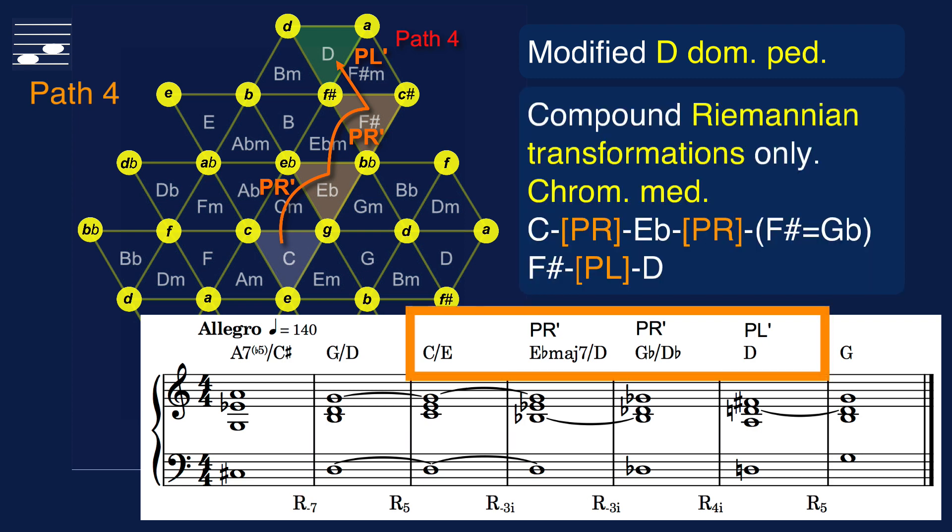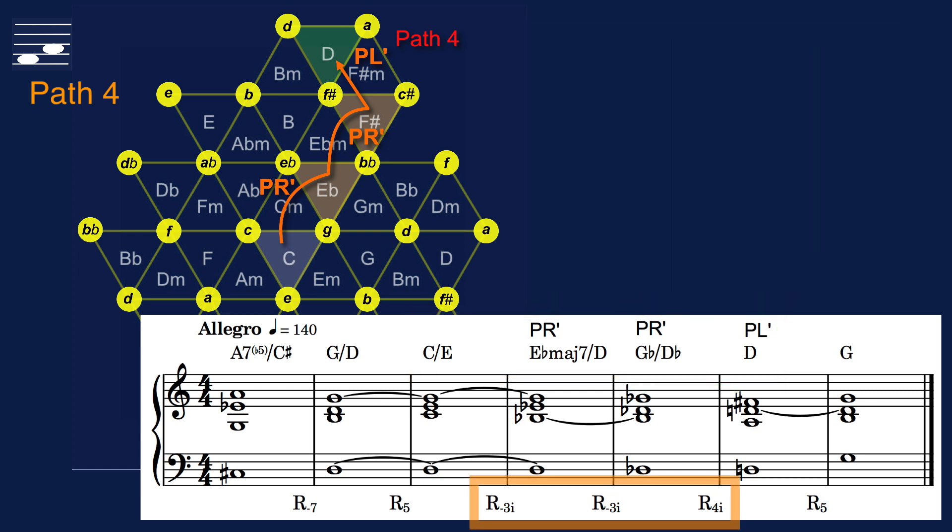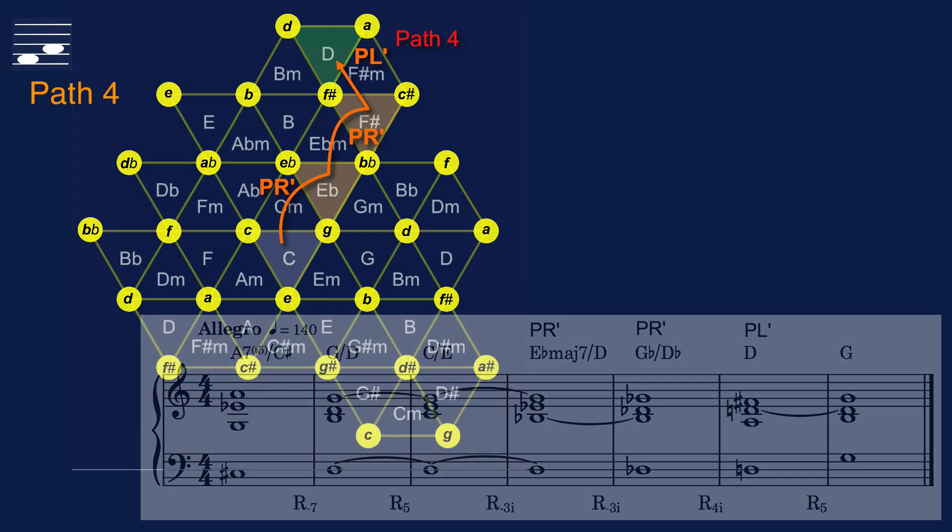Note the exclusive use of compound transformations and chromatic medians. Two times PR followed by PL, the latter when moving from G-flat major to D-major. This is a case of Schillinger's symmetric system root cycles, twice a negative R-3i and then closing with roots descending by four semitones.